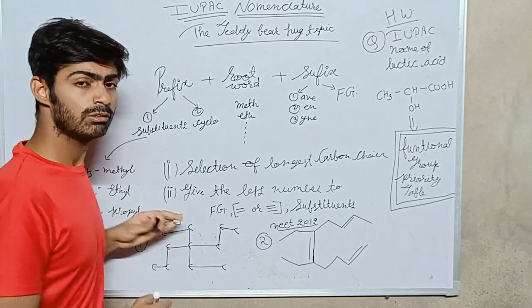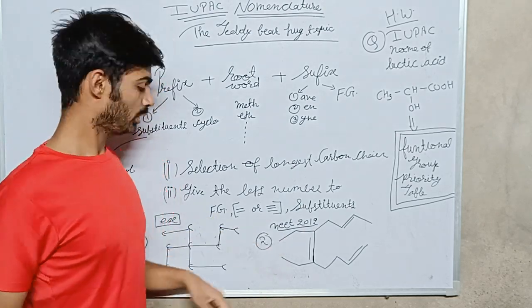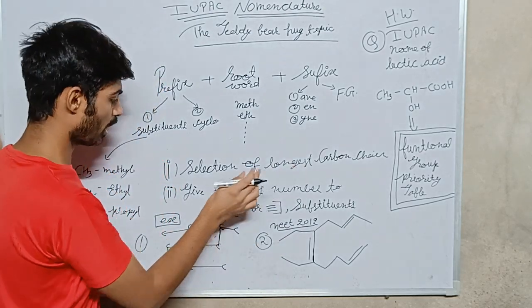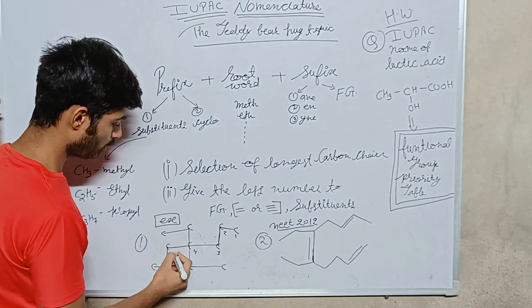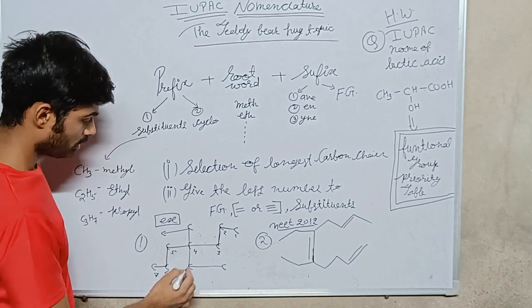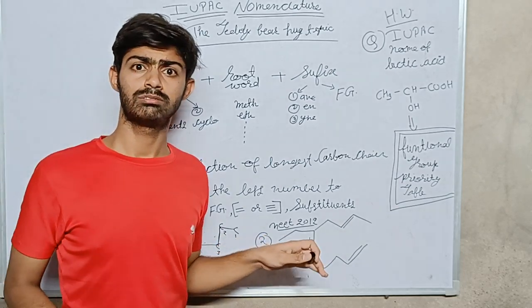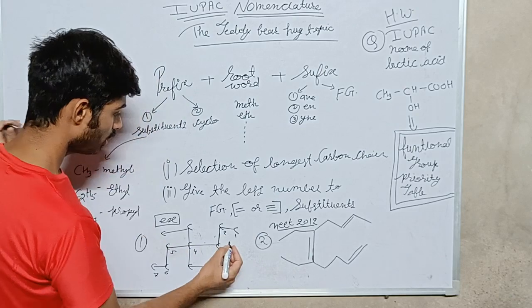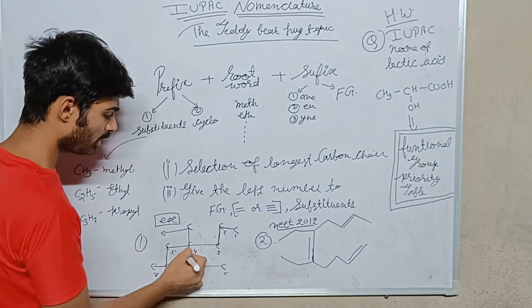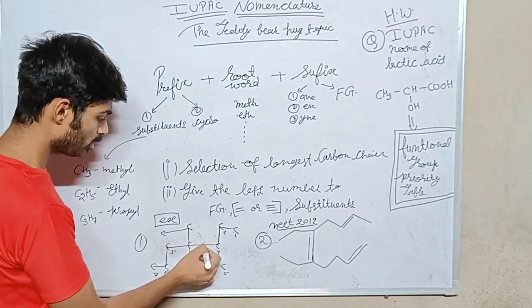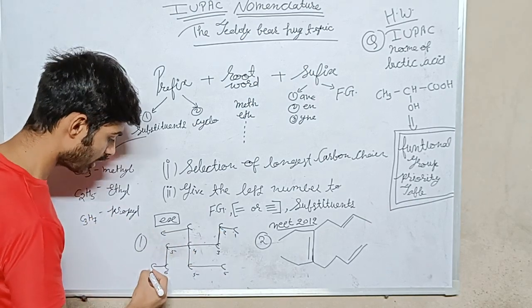So how will I give the name to this compound? I will select the longest carbon chain: 1, 2, 3, 4, 5, 6, 7. Is this long which I select? Let me check: 1, 2, 3, 4, 5, 6. This way I get 6 carbons. From this way I get 7 carbons, so I will select this way.